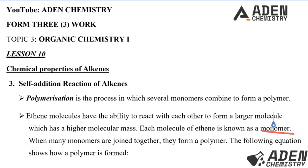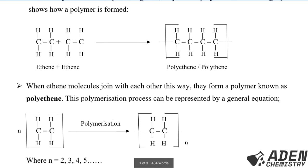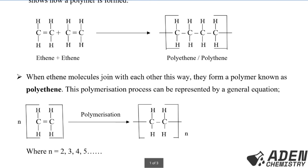When many monomers are joined together, they form a polymer. We will show how a polymer is formed. Ethene, written as C2H4, reacts with another ethene molecule in a process called polymerization. This reaction is called a polymerization reaction.